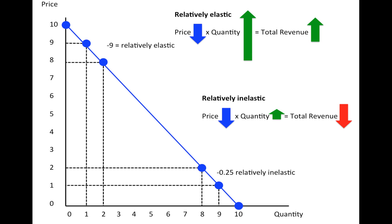This is why the demand curve changes its PED along the curve, and why we end up choosing a point that is halfway between relatively elastic — where we need to reduce price to maximize revenue — and relatively inelastic — where we need to increase price to maximize revenue. The halfway point between relatively elastic and relatively inelastic is a unitary elastic demand curve. I hope you find this helpful.